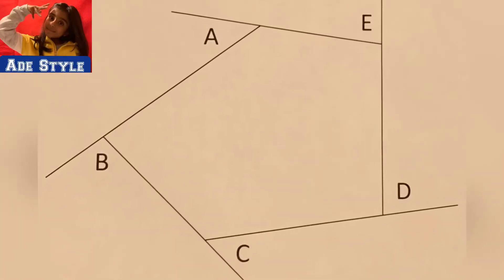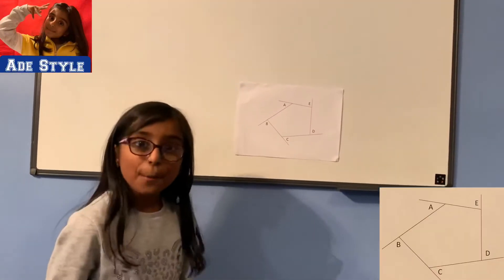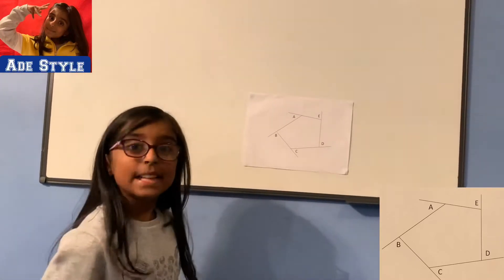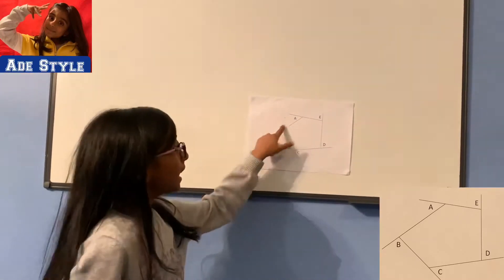Now we'll look at an example. This is a pentagon. Do you know why? It's a pentagon because it has five sides.